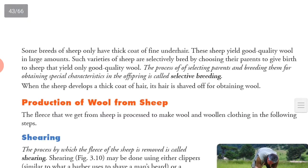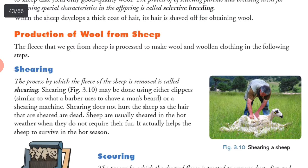Some breeds of sheep only have thick coat or fine under-hair. These sheep yield good quality wool in large amounts. Such varieties of sheep are selectively bred by choosing their parents to give birth to sheep that yield only good quality wool. The process of selecting parents and breeding them for obtaining special characteristics in the offspring is called selective breeding. When the sheep develops a thick coat of hair, its hair is sheared off for obtaining wool. The fleece or hair that we get from the sheep is processed to make wool and woollen clothes in the following steps.